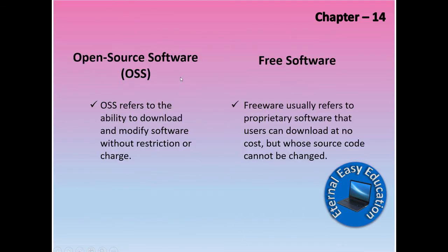What is the difference between open source software and free software? Freeware usually refers to proprietary software that users can download at no cost but whose source code cannot be changed. Open source software refers to the ability to download and modify software without restrictions or charges.